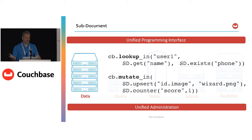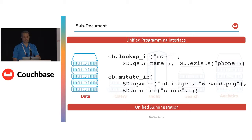The sub-document API optimizes all changes on the server without pulling the whole document down to the client and then pushing it back. So if you're not already using sub-documents, you really probably should be unless you need to pull that whole document down to your client app all the time.